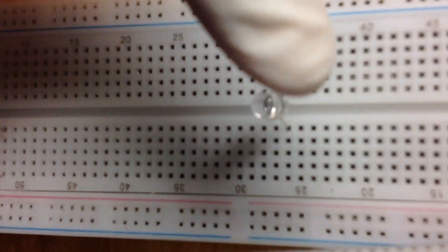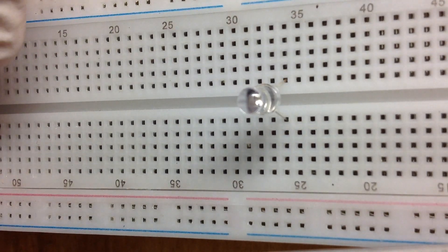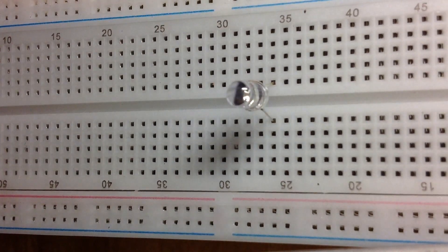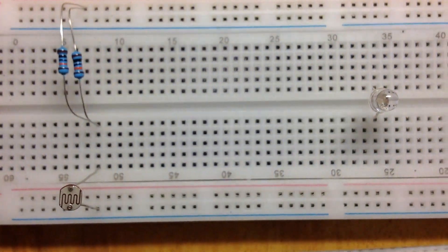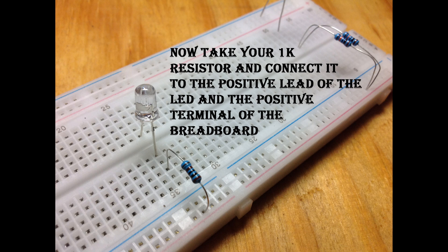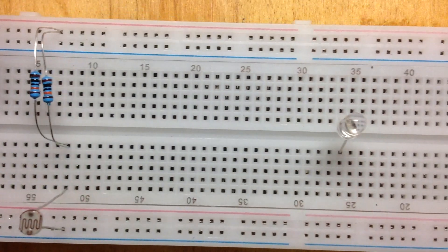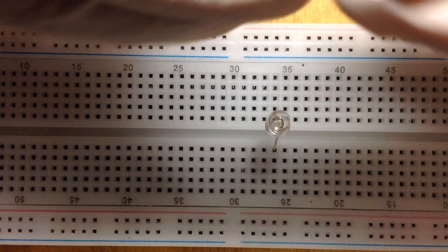The positive lead of the LED goes into row E of the breadboard, and the negative lead goes into row F. Now take your 1k resistor and connect it to the positive lead of the LED and the positive terminal of the breadboard.